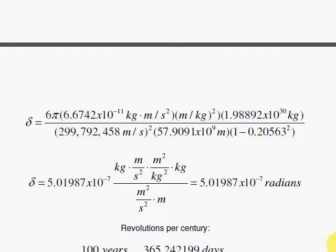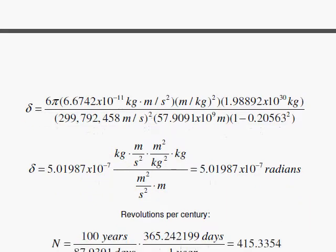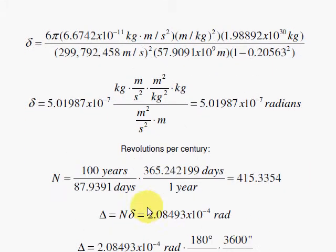So when you do all that, this is what we get. And then we go along to figure out 100 years. And for 100 years, let's see. Well, this is the result for one revolution. And here in 100 years, Mercury will do many revolutions.